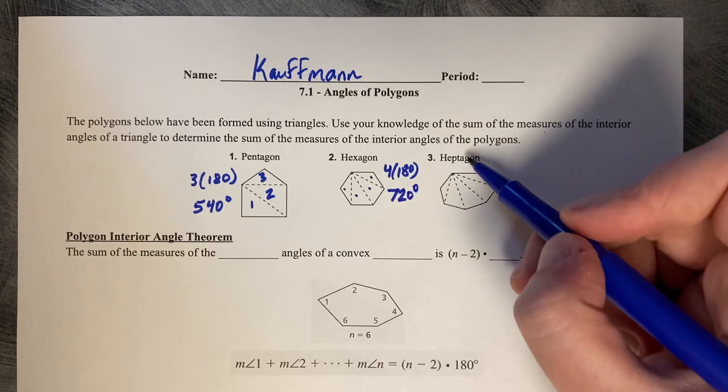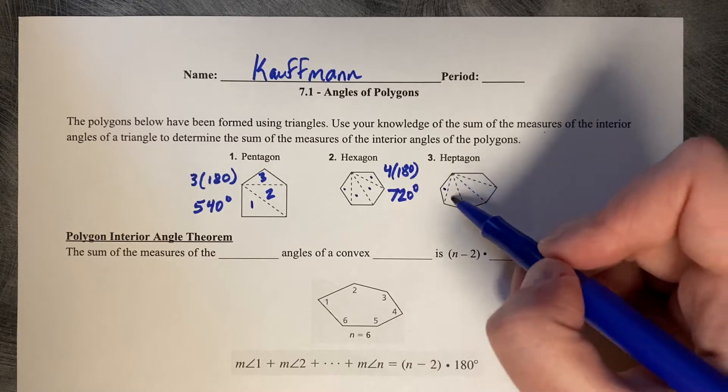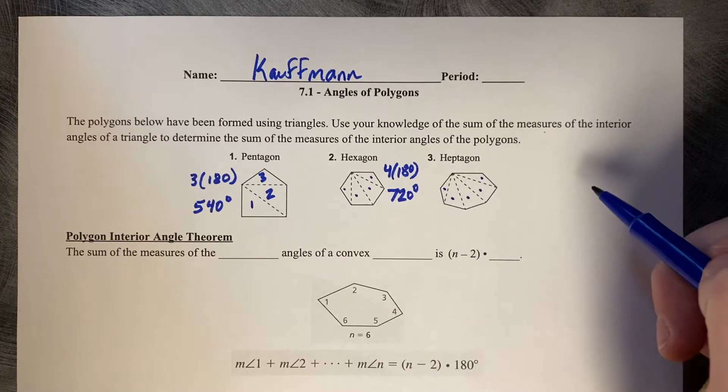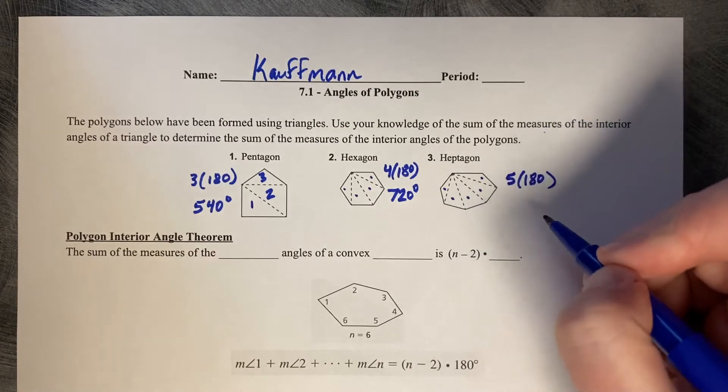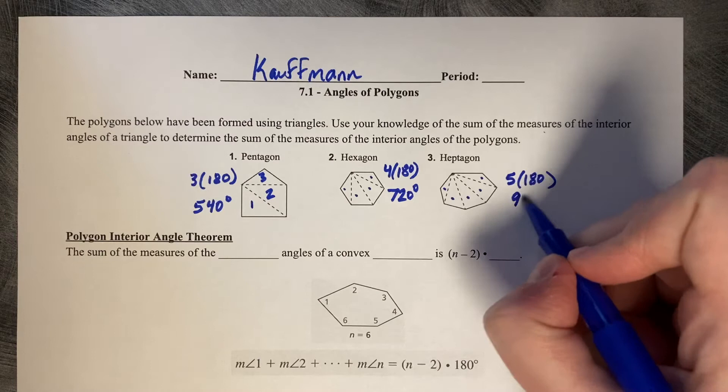And then this is a heptagon or a seven-sided figure and it's got one, two, three, four, five triangles. So five times 180. Five times 180 is 900.